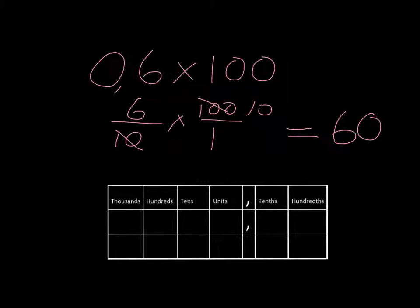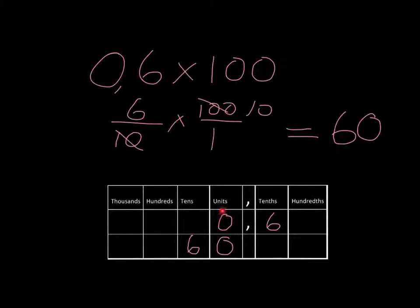Let's put it into our place value table. We've got 0.6. When we multiply it by 100, we get 60. And again, this makes sense. Multiplying by 100 is like multiplying by 10, which would increase your place value once, and multiplying by 10 again, which would increase your place value twice. So basically, the tenths then just move to become tens because they are 100 times as big.